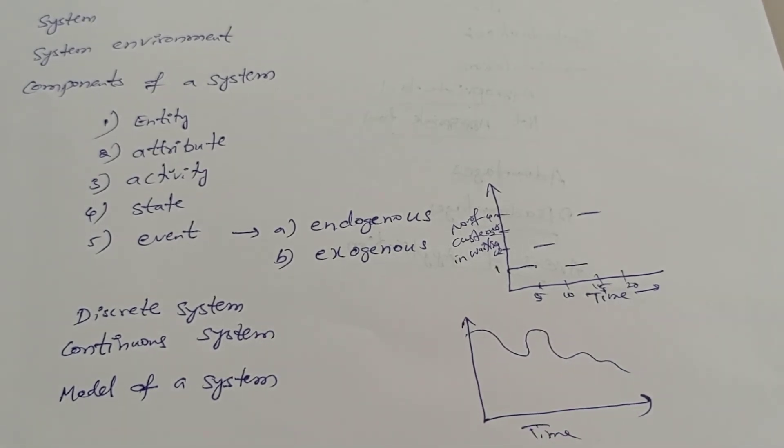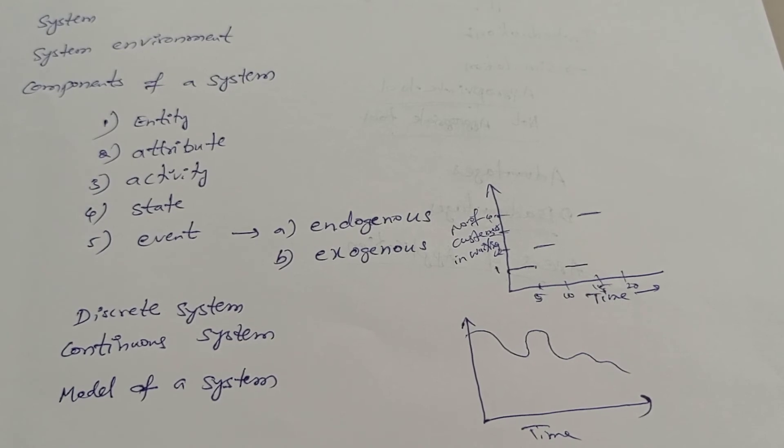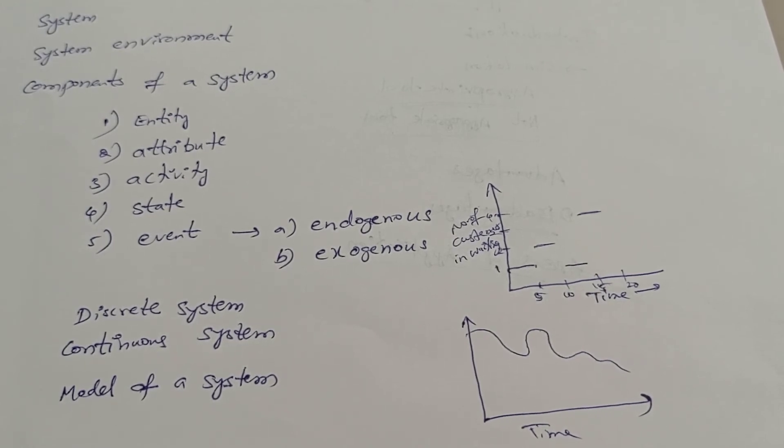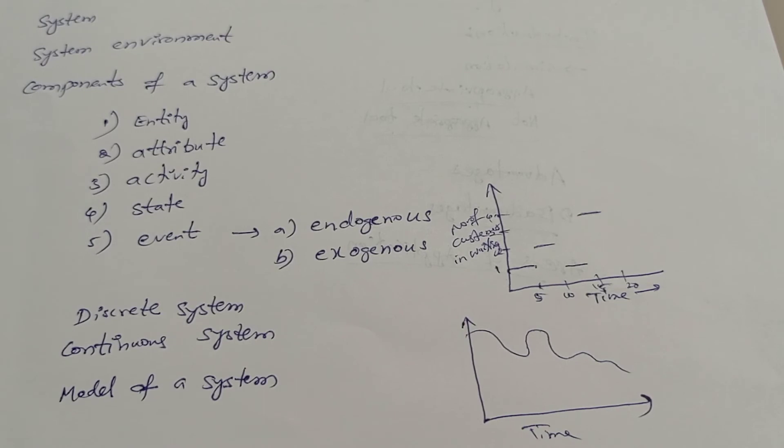For example, the head of water behind a dam. When you observe the dam, the head of water will be changing, but it is continuous. This is an example of a continuous system.